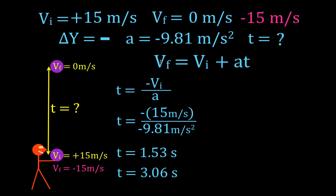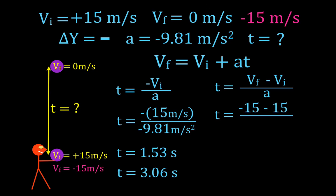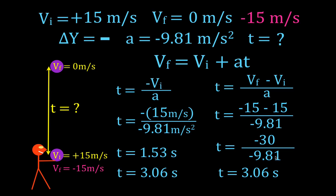In the second case, the final velocity is -15 meters per second. Using the same equation and solving for time: t = (v_f - v₀) / a = (-15 - 15) / (-9.81) = -30 / -9.81, which gives the exact same total time of 3.06 seconds. So it doesn't matter which method you use — you get the same answer. A lot of people prefer the first method and multiply by two, but both are valid.